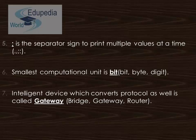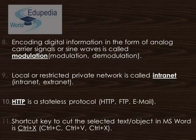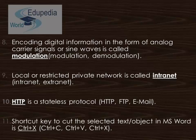Blank seven: an intelligent device which converts the protocol is called a gateway. Blank eight: encoding digital information in the form of analog carrier signals or sine waves is called modulation. Blank nine: a local or restricted private network is called an intranet. Blank ten: hypertext transfer protocol is a stateless protocol. Blank eleven: the shortcut key to cut selected text or an object in Microsoft Word is Control + X. If all these blanks are correct, you would be given 11 marks.